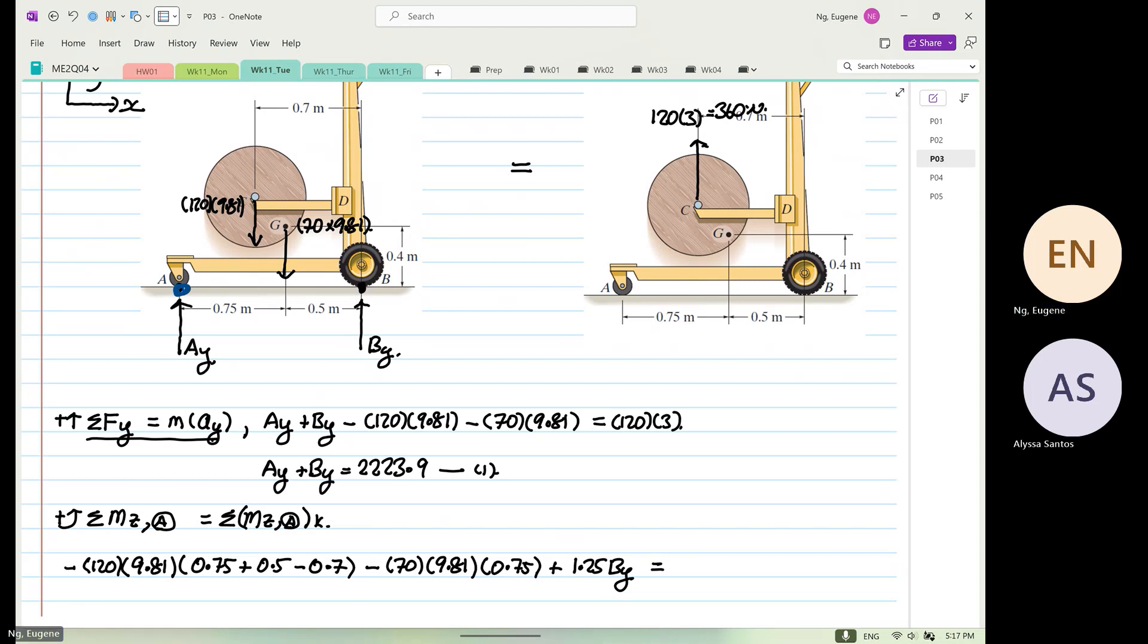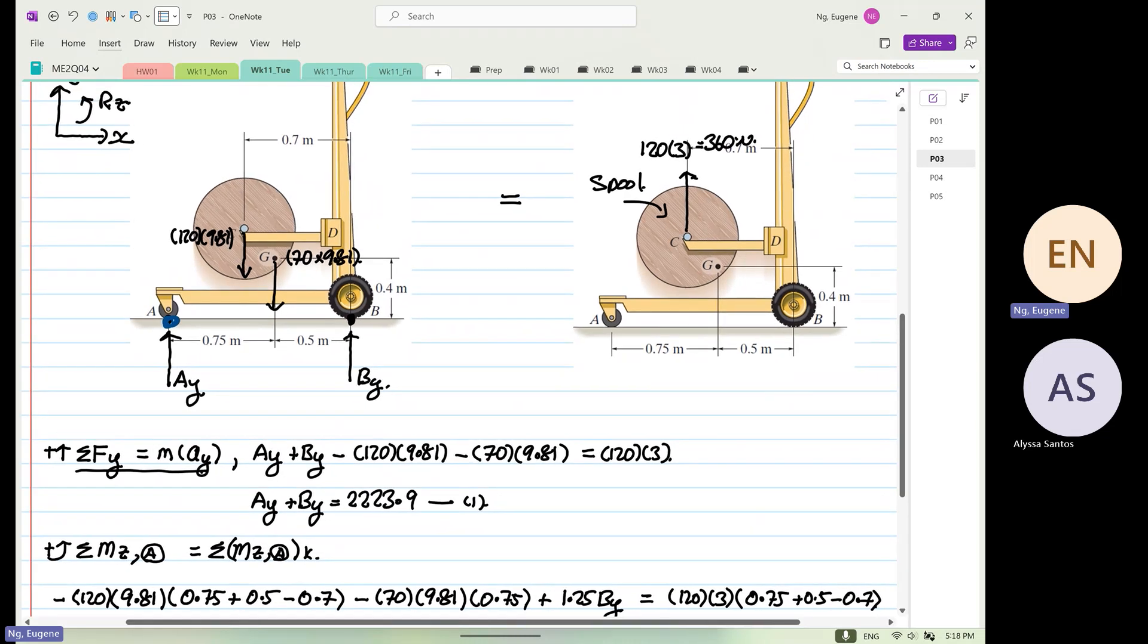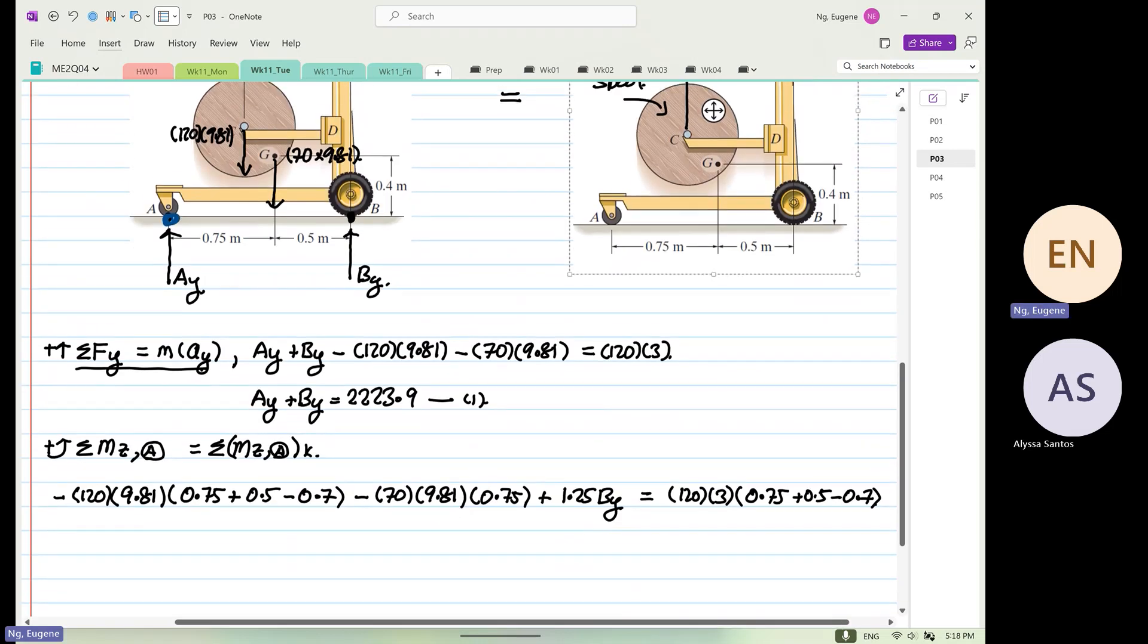Then this will be equal to... So, now we have the acceleration. The acceleration is only due to the spool. Right? It's only due to the spool. So, this is 120 multiplied by 3. You have to do 0.75 plus 0.5 minus 0.7. Now, why we only take the spool? Because it's only the spool that is moving what? Up. The truck is not moving at all. The truck is completely what? Stationary.